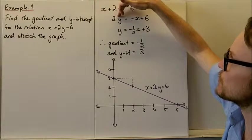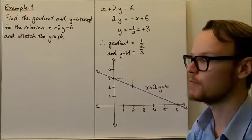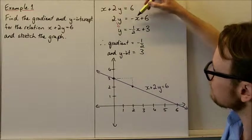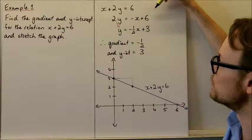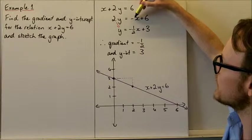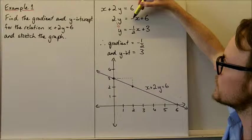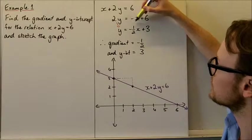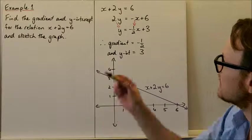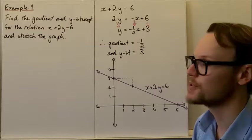but we've still got a coefficient of 2y. To remove that, divide both sides by 2. 2y divided by 2 is just y. Divide the whole side by 2. This is negative 1, so negative 1 divided by 2 is negative one-half. The negative x becomes negative one-half x, and 6 divided by 2 is 3.